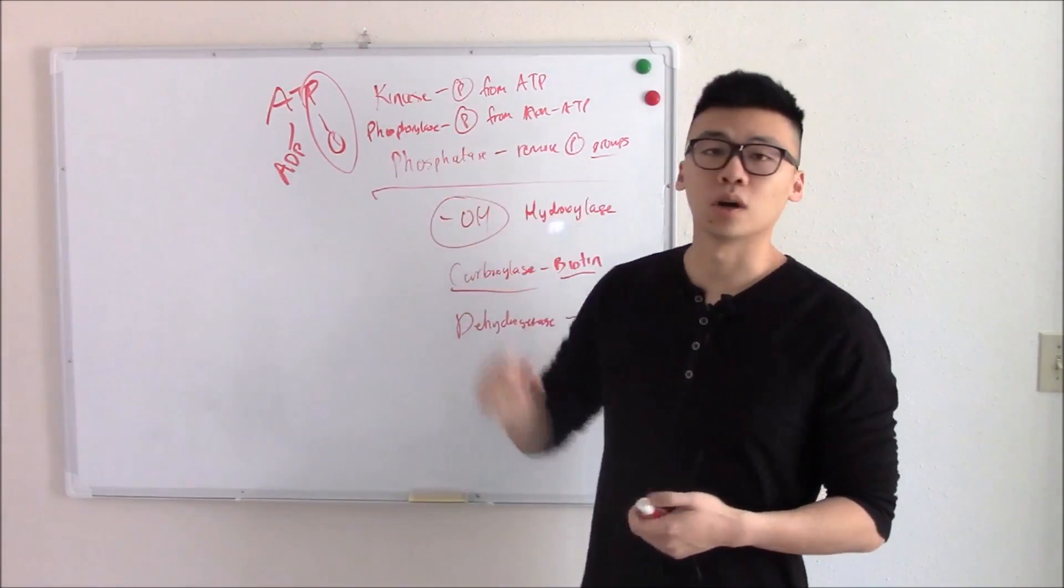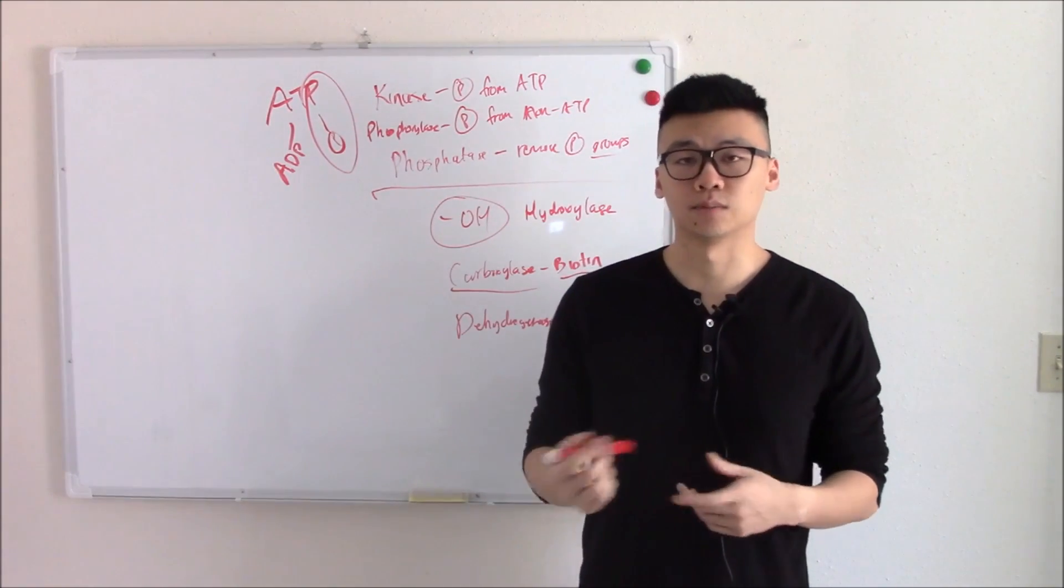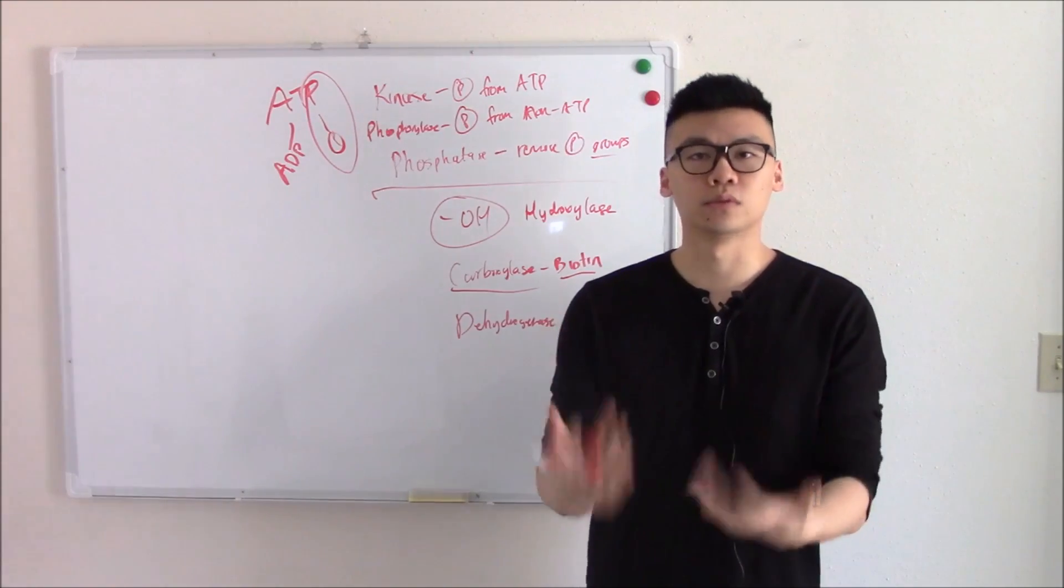So rule number one, always know what abbreviated words stand for. Rule number two, just know superficially what enzymes do what. I think that'll help you moving forward.